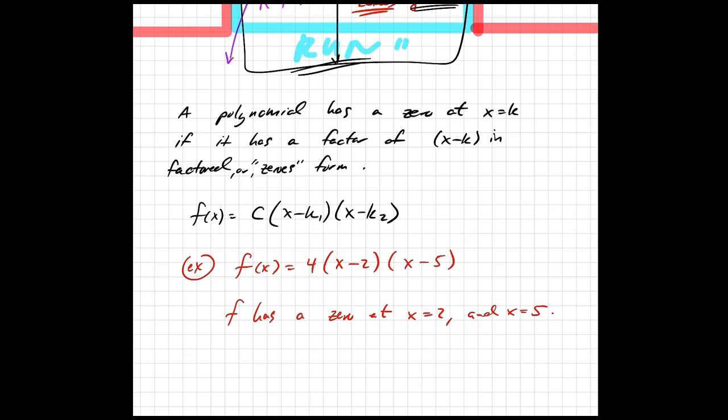Why is that the case? Well, if you plug in x equals 2, you'll see that this whole term will go to zero, and you'll have 4 times zero times negative 5, which is zero. And likewise, if you let x equal 5, this term will be zero, so it'll be a bunch of stuff times zero, which is zero.